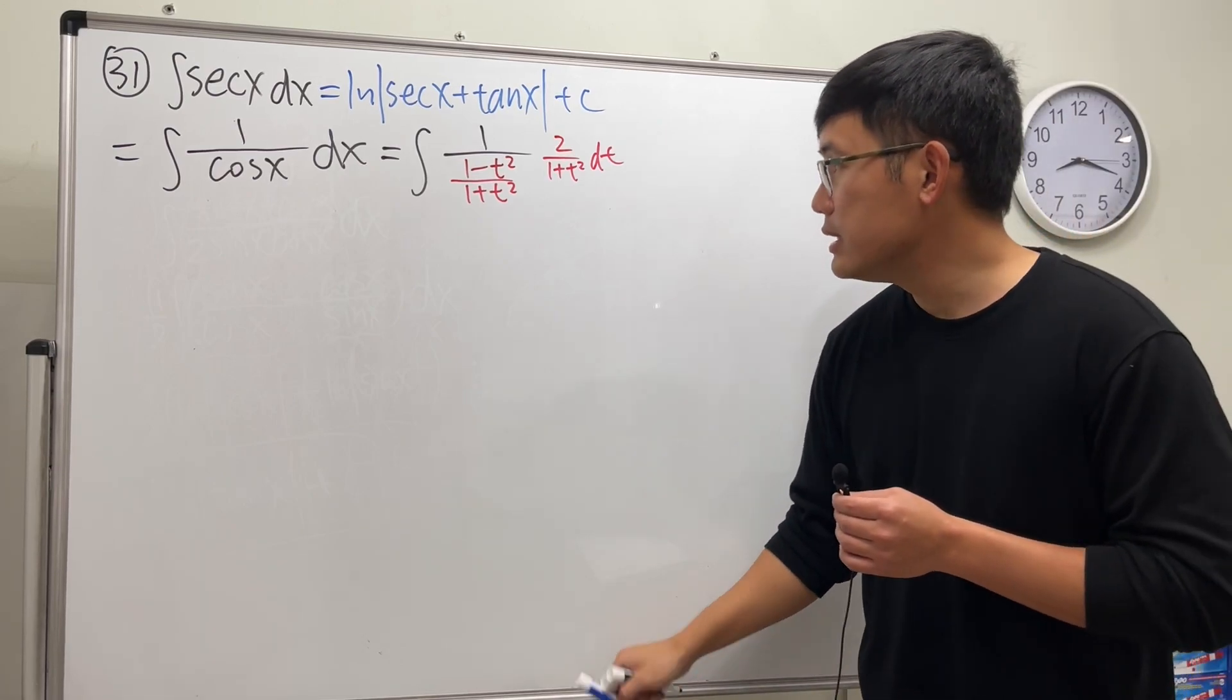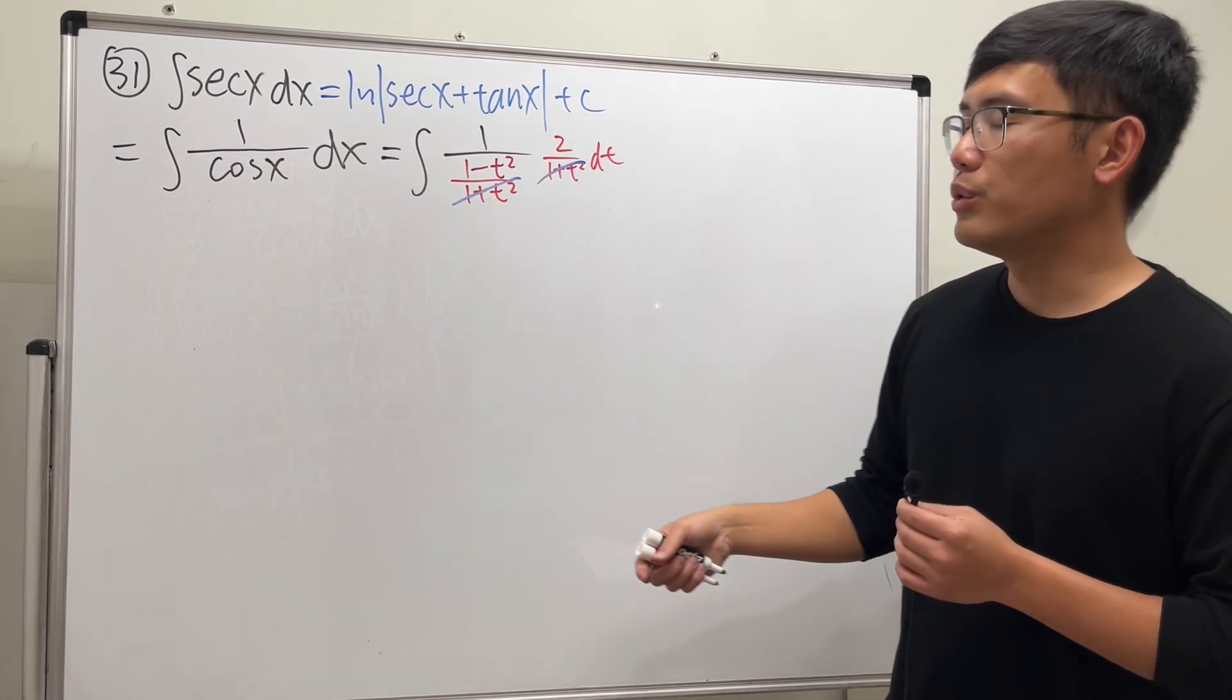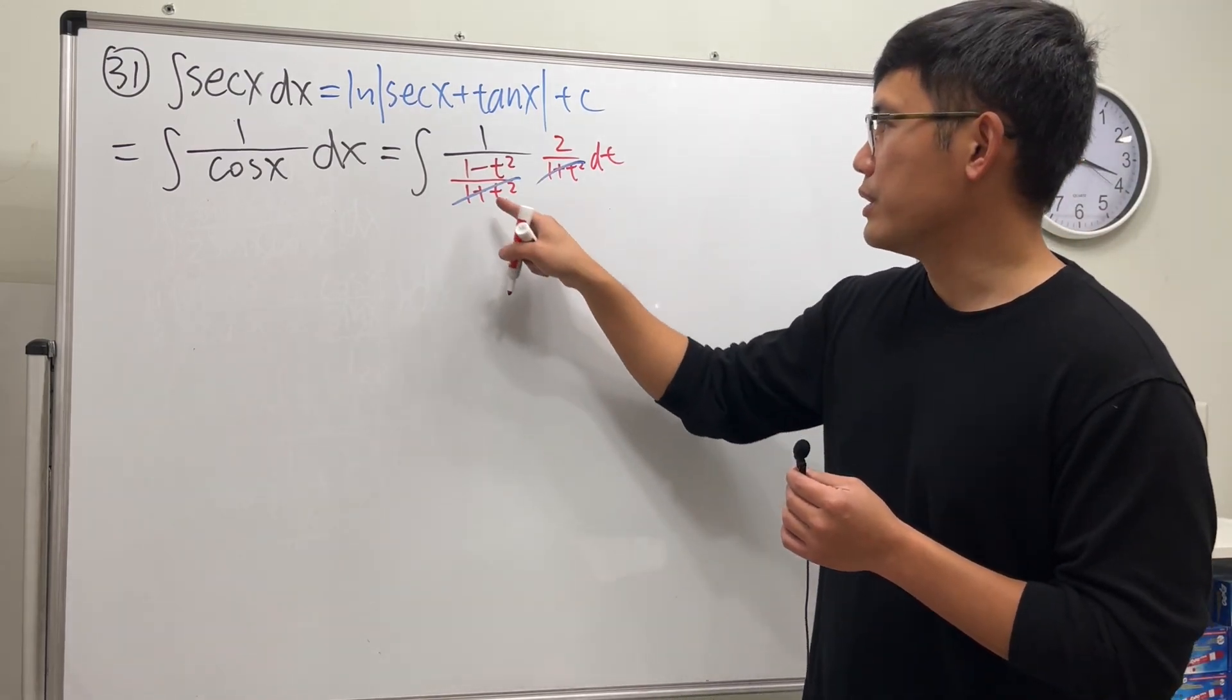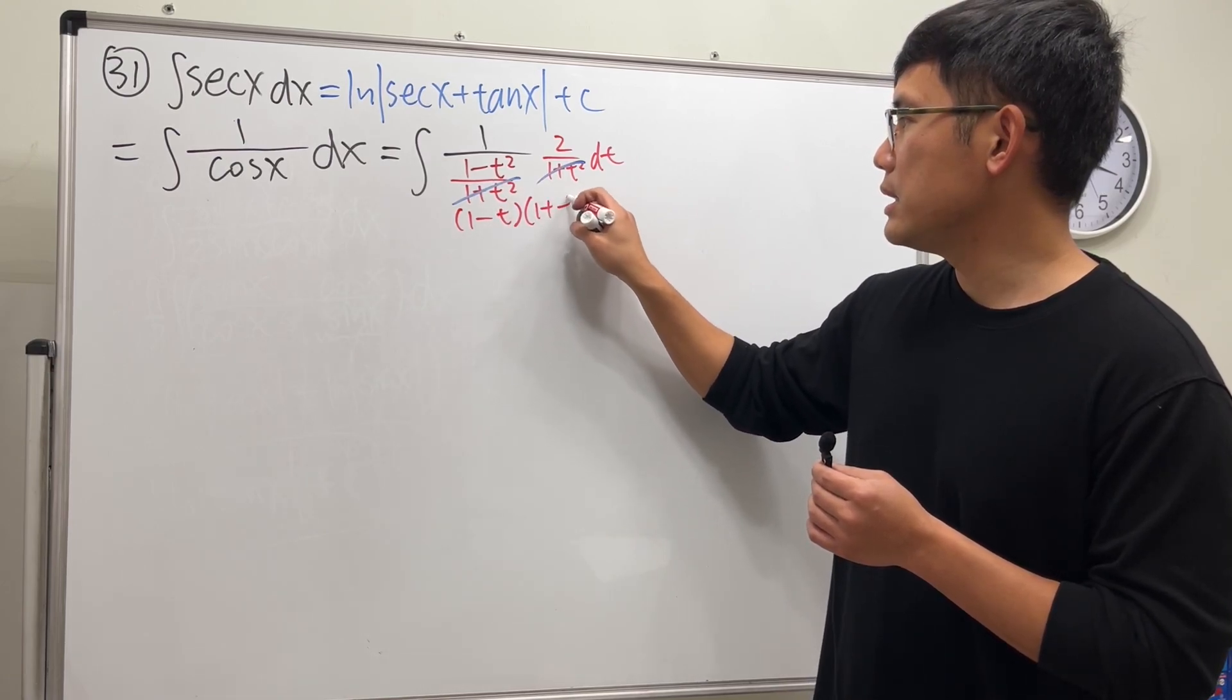Now, we see that this and that cancel pretty nicely, and then we can do partial fraction to integrate this. 1 minus t squared is just 1 minus t times 1 plus t.